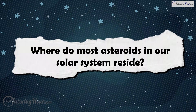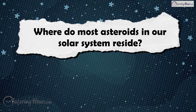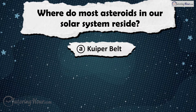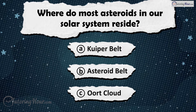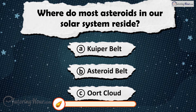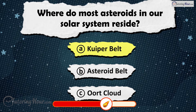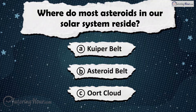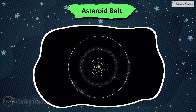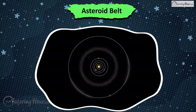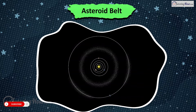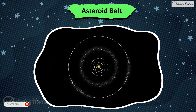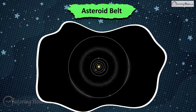Where do most asteroids in our solar system reside? Is it A) Kuiper Belt, B) Asteroid Belt, or C) Oort Cloud? The answer is Asteroid Belt. Most asteroids orbit the Sun in the Asteroid Belt between Mars and Jupiter. This region is like a cosmic junkyard filled with rocky debris.